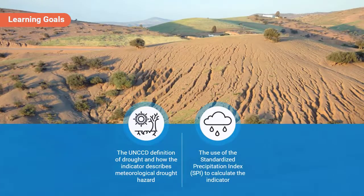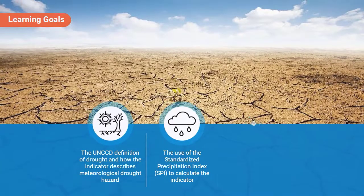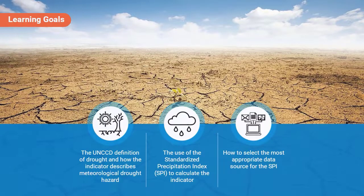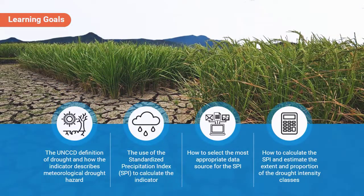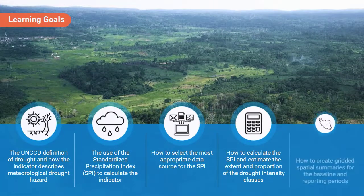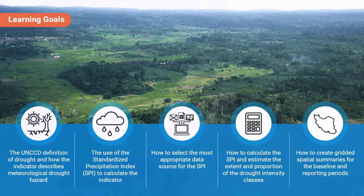You will also learn about the use of the Standardized Precipitation Index, or SPI, to calculate the indicator; how to select the most appropriate data source for the SPI; how to calculate the SPI and estimate the extent and proportion of the drought intensity classes; and how to create gridded spatial summaries for the baseline and reporting periods.